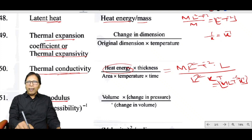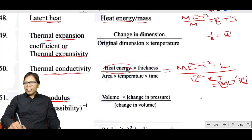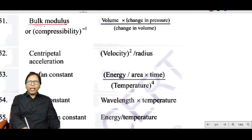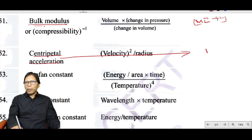Bulk modulus has the same dimension as pressure, energy density, stress, Young's modulus, and modulus of rigidity: ML⁻¹T⁻². Centripetal acceleration has the same dimension as acceleration: LT⁻².